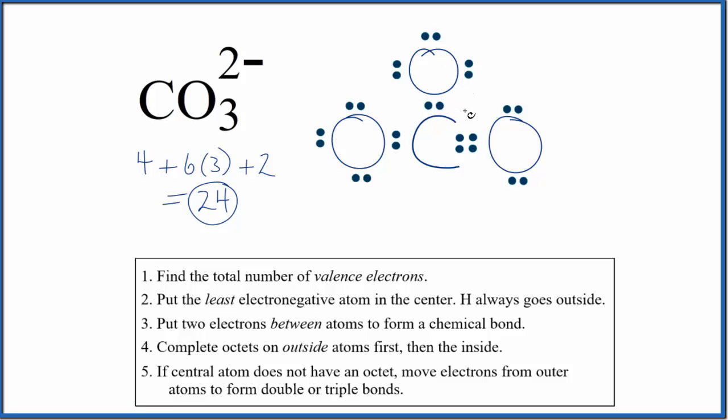If you were to calculate the formal charges, you'd find that the carbon is 0 and the double bonded oxygen is 0. Then the single bonds are negative 1 each. But that makes sense because negative 1 plus negative 1 equals the 2- ionic charge. So this is the best Lewis structure for the carbonate ion.